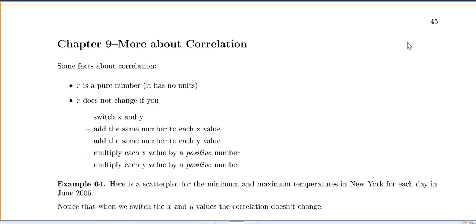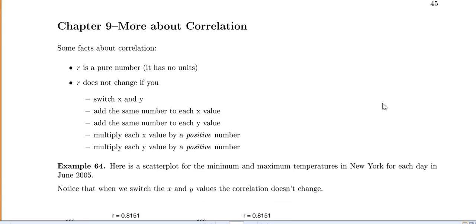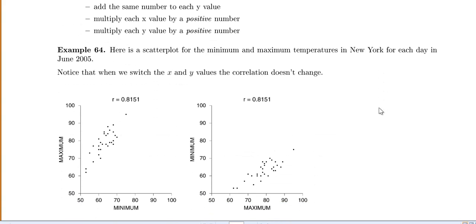So for example 64, here's a scatter plot for the minimum and maximum temperatures in New York for each day in June 2005. So for every day we did the minimum and maximum temperatures. We graphed the minimum along the x-axis, the maximum along the y-axis.